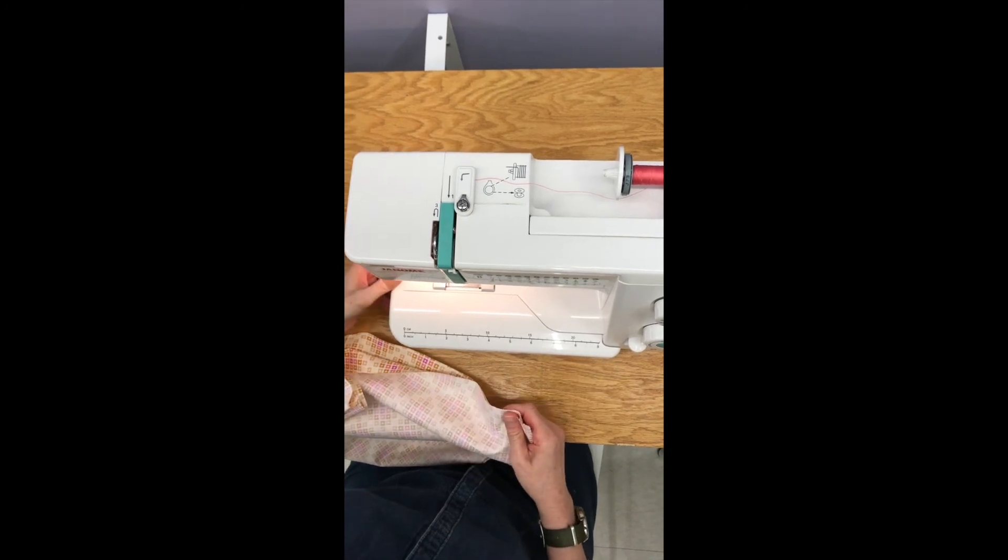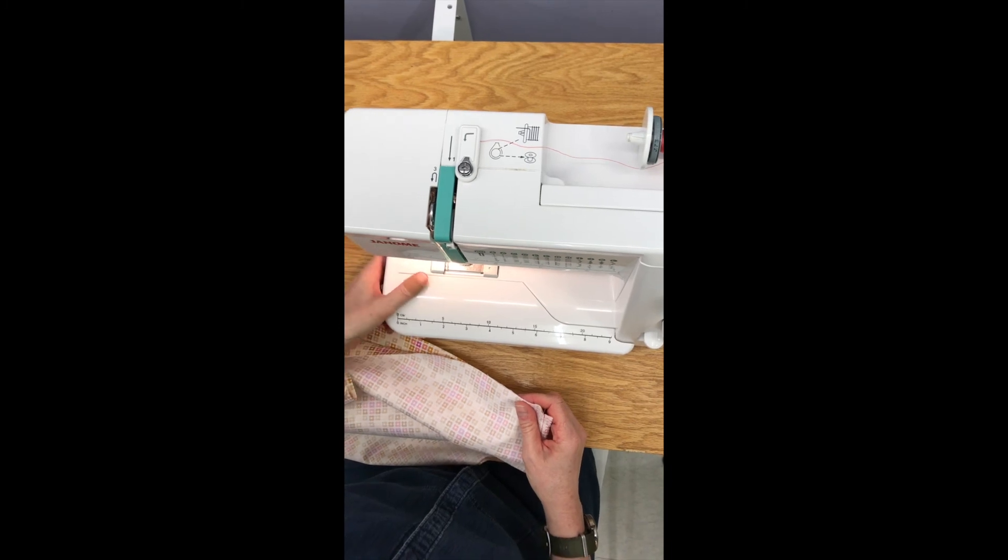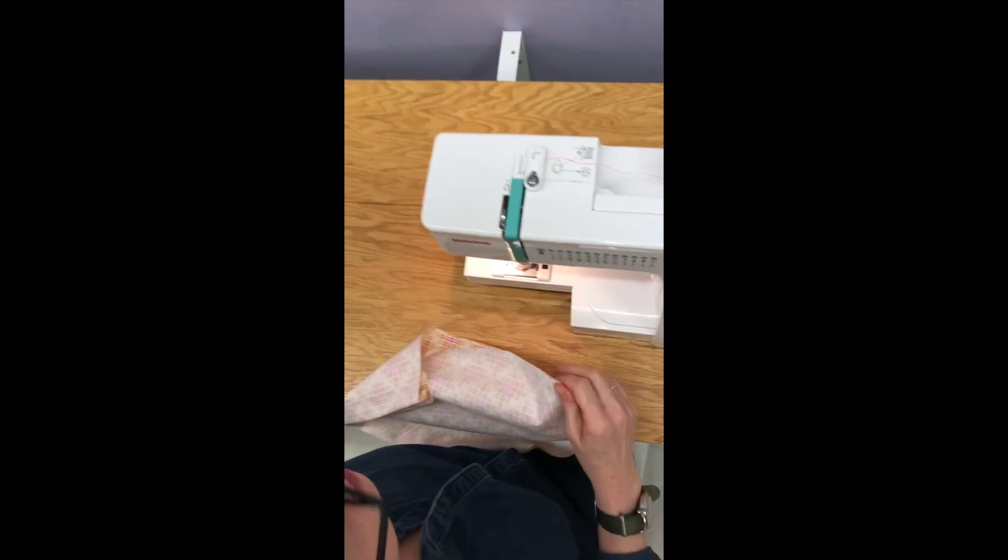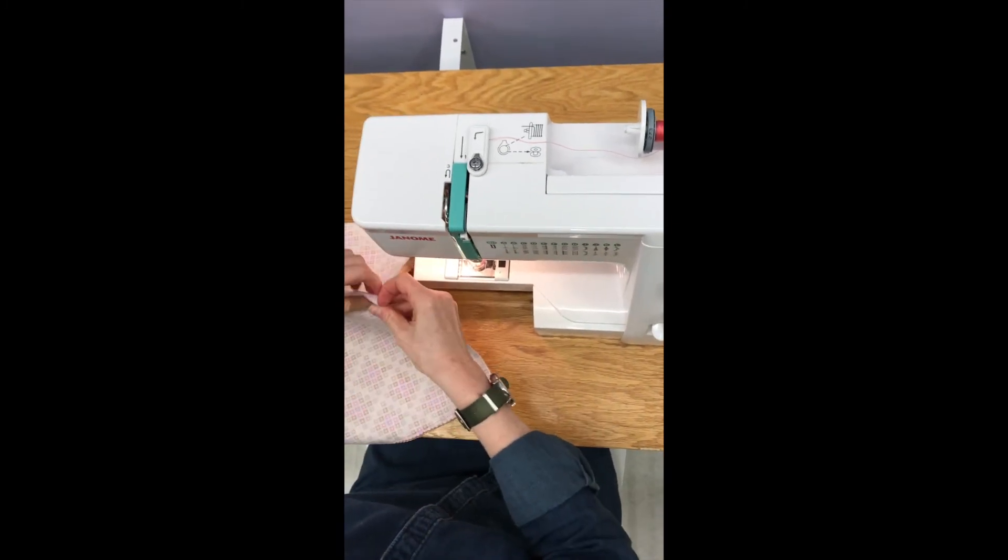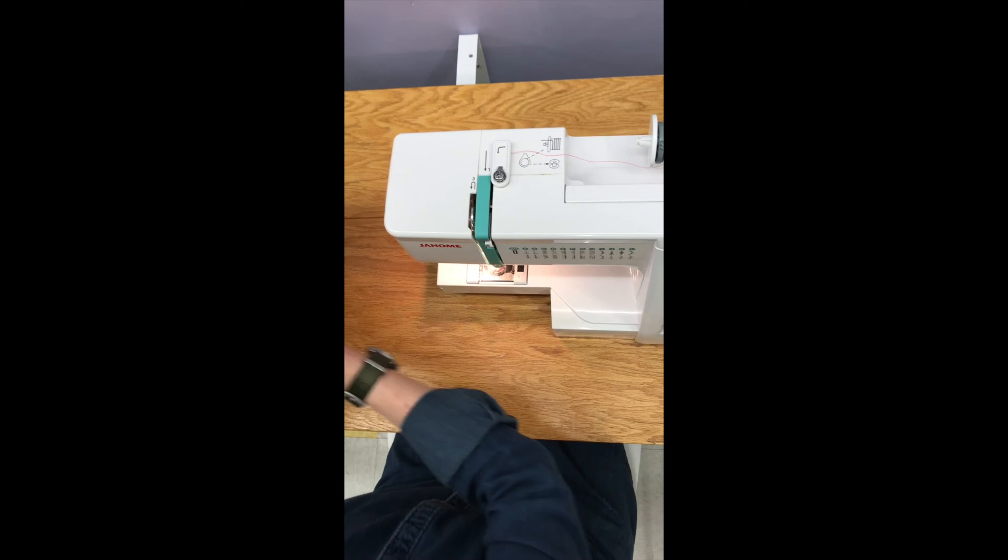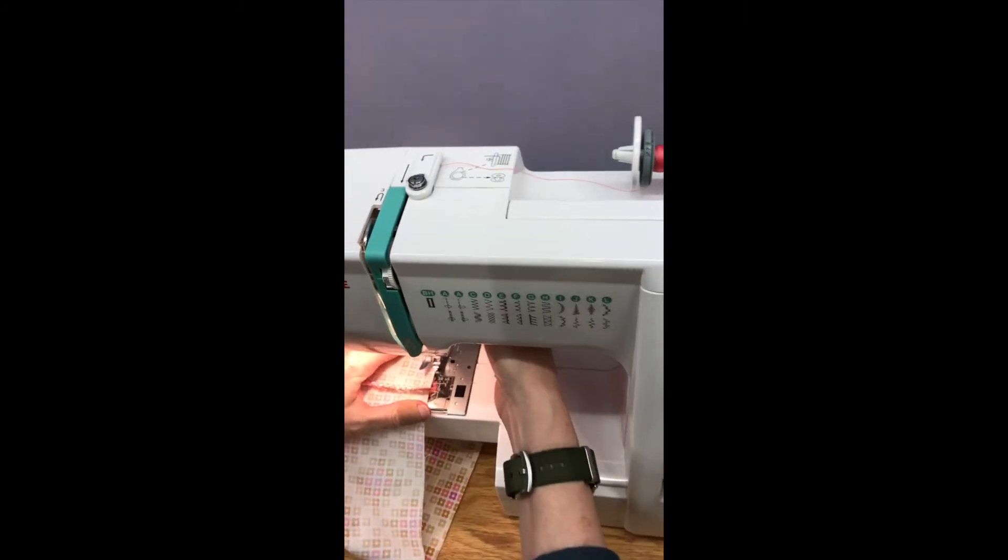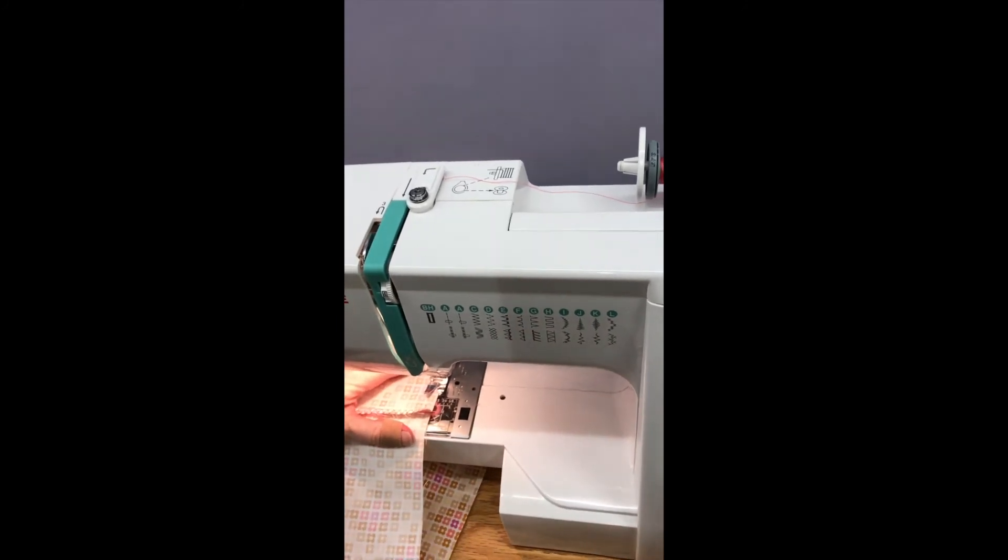The next thing you're going to do is zigzag all around the top edge of your skirt. So it's handy if you can take the arm off of the machine like this. You're going to open your skirt up and zigzag around one raw edge just in the circle.